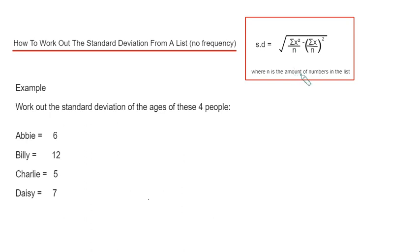Let's have a look at the example. We've got to work out the standard deviation of the ages of these four people. Abby is 6, Billy is 12, Charlie is 5, Daisy is 7.